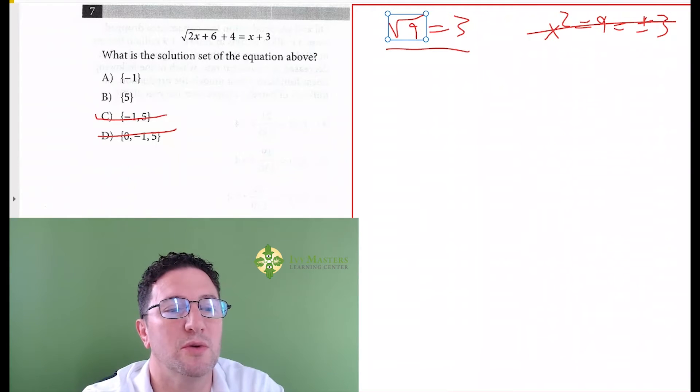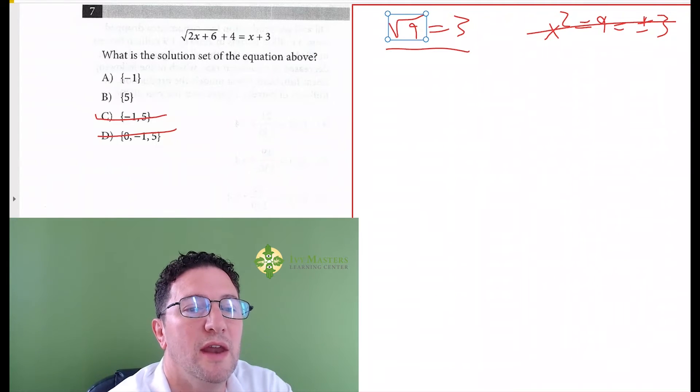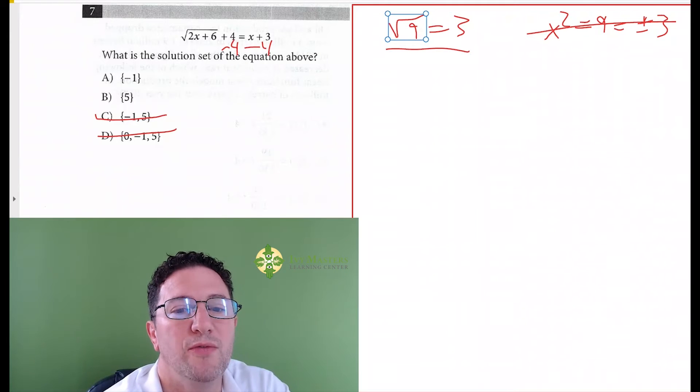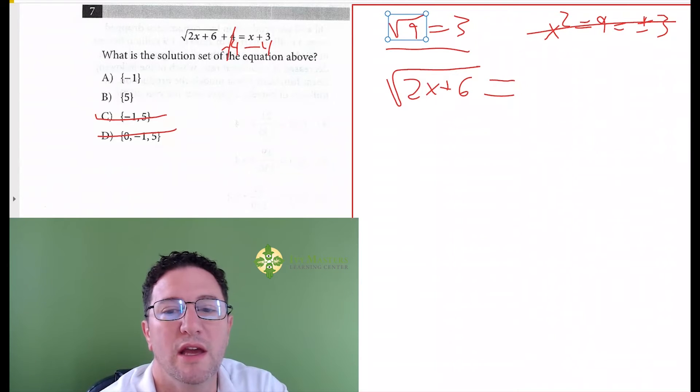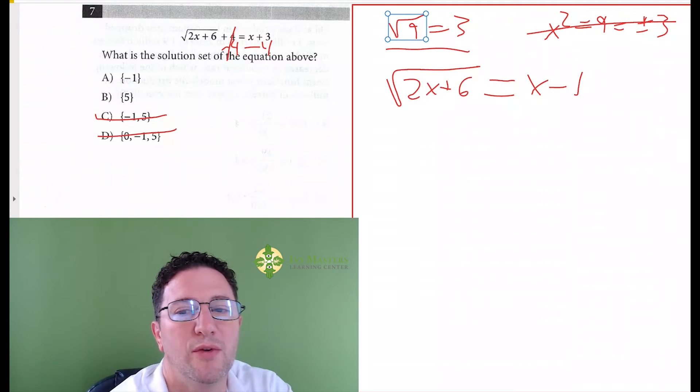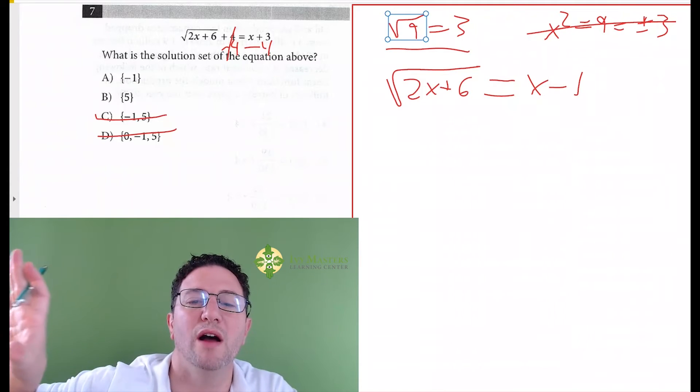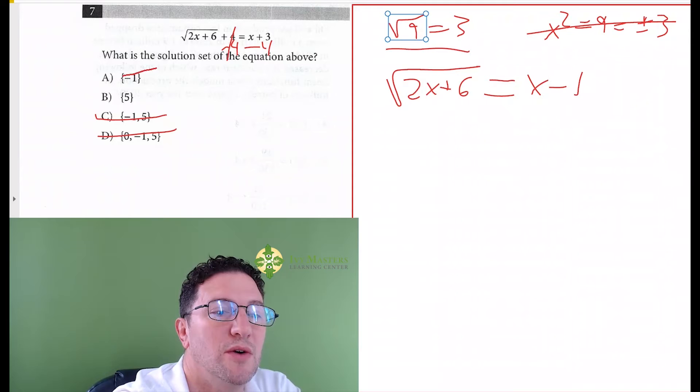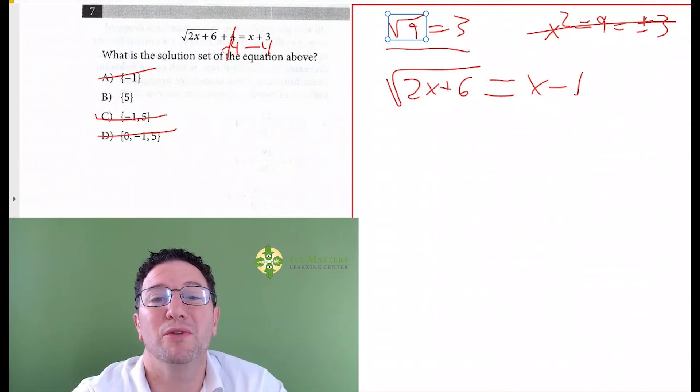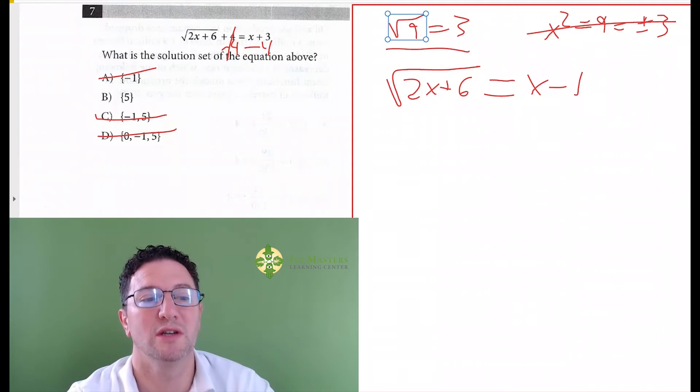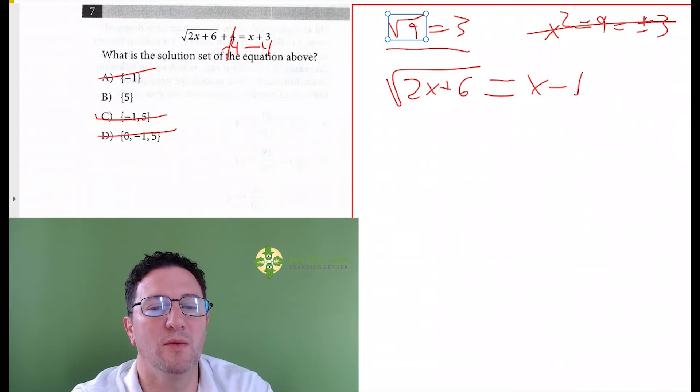So if I was approaching this question, I would do that first, then I would subtract the four from both sides, and then what we find is we've got the square root of 2x plus 6, the fours would cancel, and you get equals x minus 1. And notice if I plug negative 1 in for the x, I get a negative 2 on the right side of the equation, so A is gone. The correct answer has got to be 5, and I didn't really even do much.